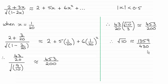So you can see it comes down to 1359 over 430. So you just substitute 1/20 into the left hand side and you can see that it reduces down to this. And in the right hand side, it reduces down to 453 over 200.